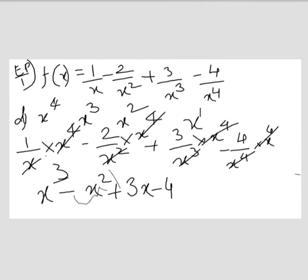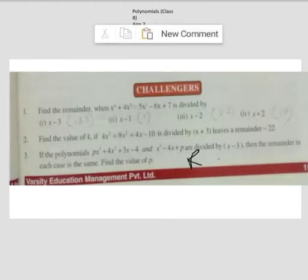...these two polynomials are divided by x - 3, and it was found that both remainders were the same. So we have to solve that. For both polynomials, we will find the remainders first, then equate them to find the value of p.